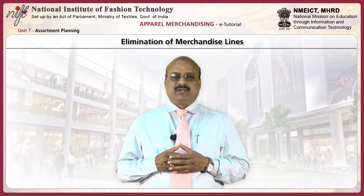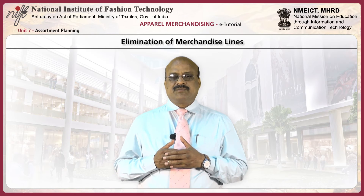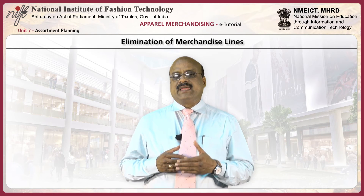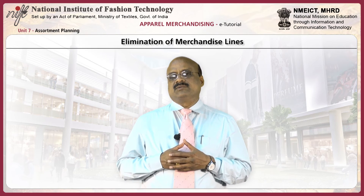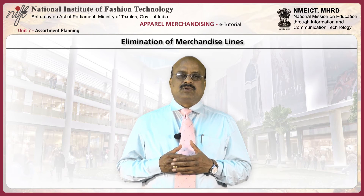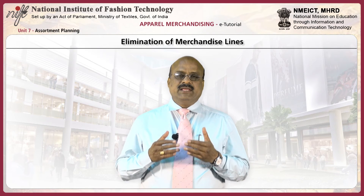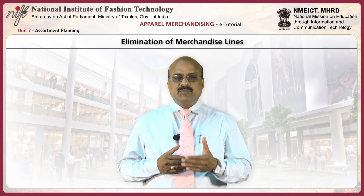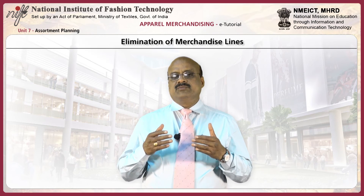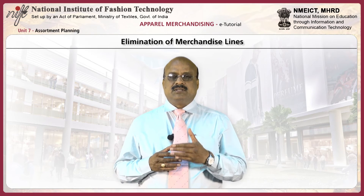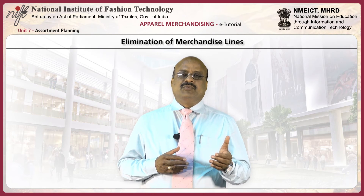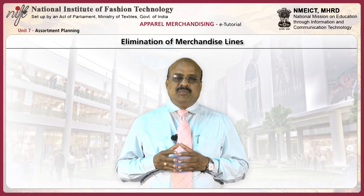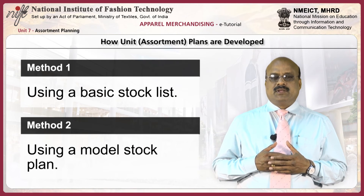The final factor the buyer must consider when planning the assortment is the elimination or dropping of certain items from the merchandise plan. As more items are added, a limit on what can be carried — considering financial investment and space required — becomes evident. The buyer must consider whether items to be dropped are fashion goods, which must be eliminated before they become out of style, or staple goods, which must be eliminated before they become obsolete or outdated.